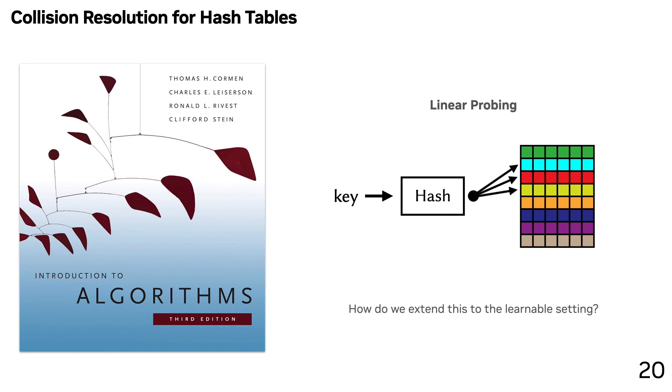As it turns out, collision resolution for hash tables is a well-studied problem, and if you open up a famous intro to algorithms textbook, you'll find lots of ideas. One such idea is linear probing, where the idea is that once you hash into some entry in a hash table, you sequentially access the table until you find the key of your choice. We want to think about how we can extend this sort of idea to the learnable setting.